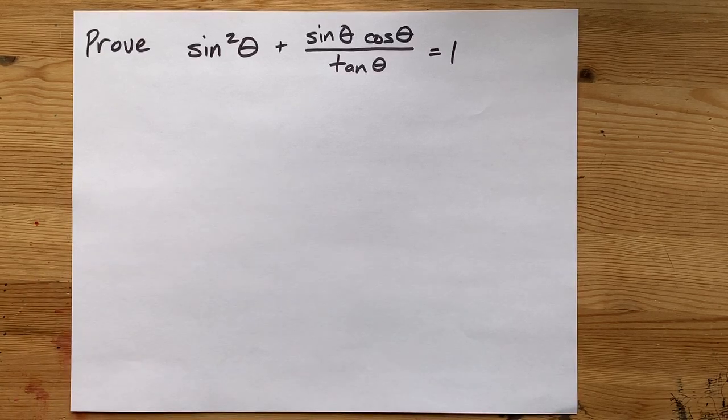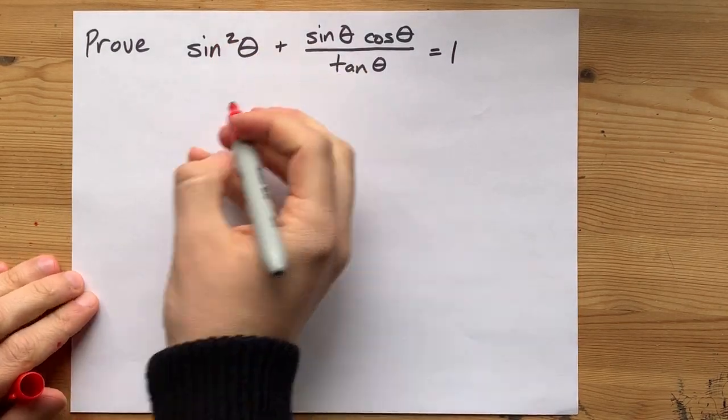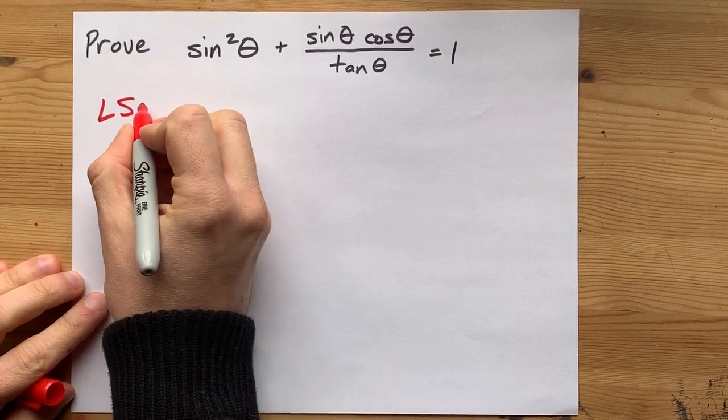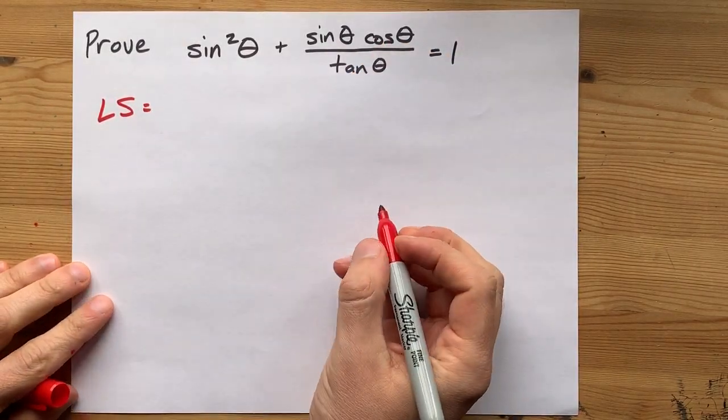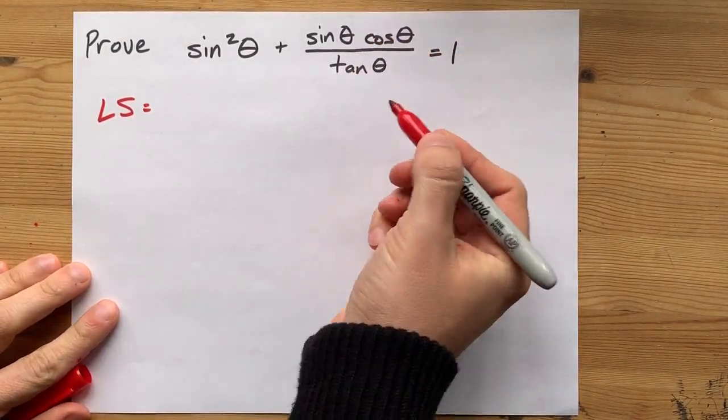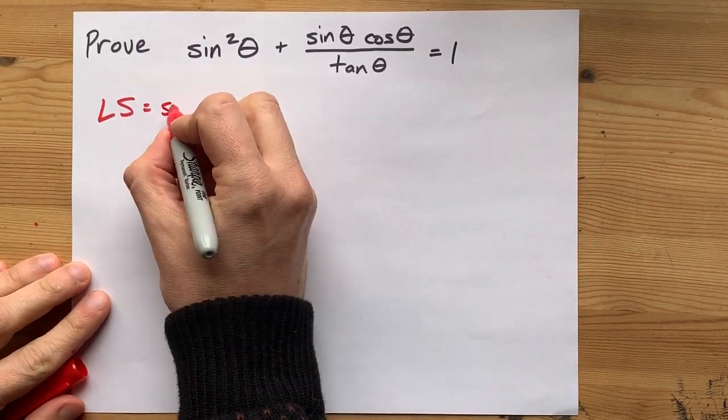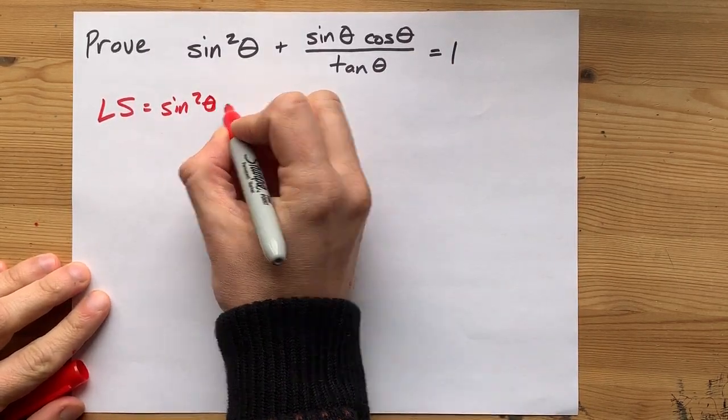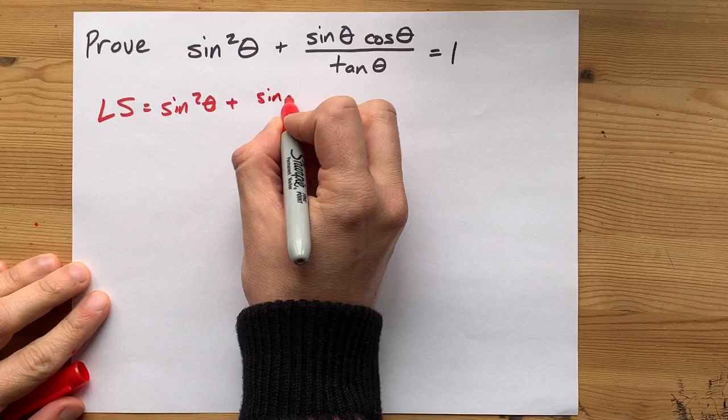Now here's an identity. Sine squared of an angle plus sine times cos divided by tan, all of that same angle, equals 1 in the end. How are we ever going to get those to be the same thing?